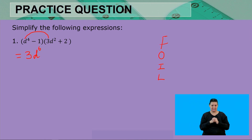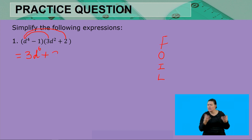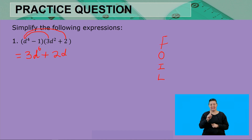Next, we multiply 1d⁴ by 2. Since 2 has no variable, we keep the variable as it is: that gives us 2d⁴. Then for the inner terms, because we are subtracting, we have -1 multiplied by 3d².